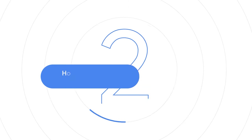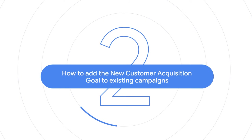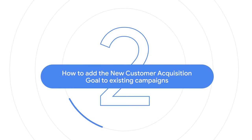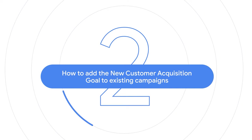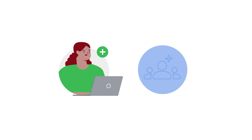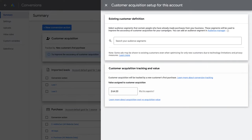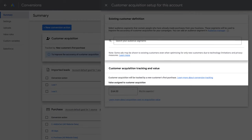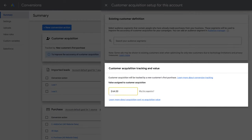In this chapter, we'll cover adding the New Customer Acquisition Goal to an existing Performance Max, search, or video action campaign. First, if you want to use the New Customer Value mode, follow these steps. Step 1: Select existing customer lists representing existing customers through Customer Match. Step 2: Set the value assigned to Customer Acquisition.